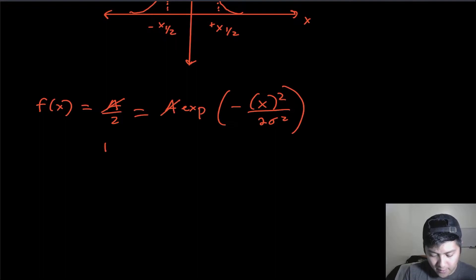But we can cancel out A here because it's on both sides. So we will have one half is equal to exponential of negative x squared over 2 sigma squared.